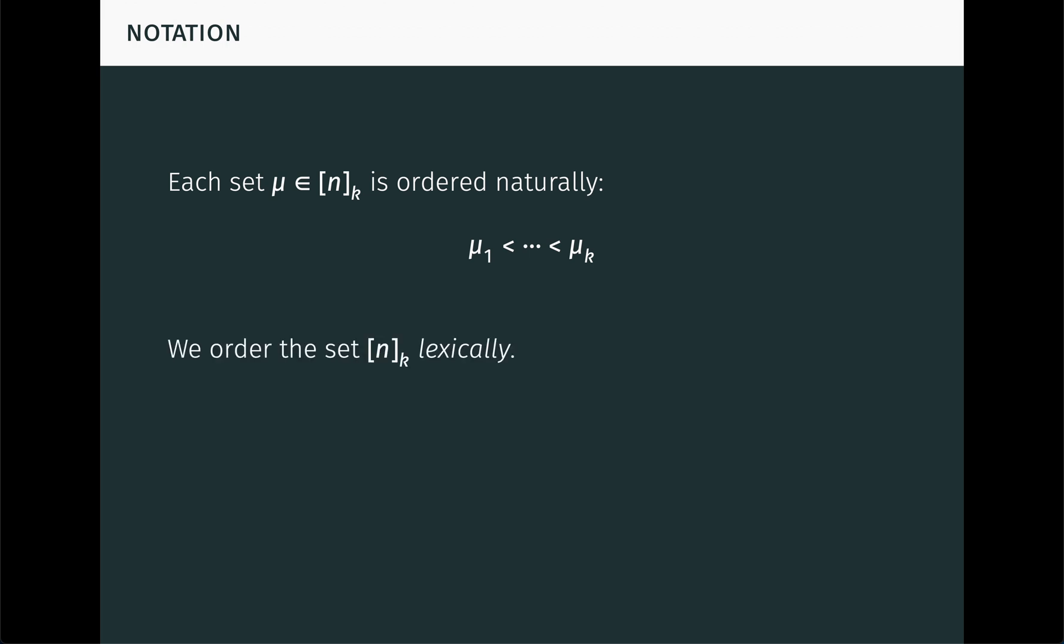We order the set (n k) itself lexically, or lexicographically if you want to be fancy, like words in a dictionary. It's easier to understand this from an example rather than a formal definition. For example, in (3,2), the sets are ordered like this. The set consisting of 1 and 2 comes first, followed by the set consisting of 1 and 3, and finally the set consisting of 2 and 3. To determine the relative ordering of two sets, we start by comparing their first elements. The set with the smallest first element comes first. If the first elements are equal, then we compare the second elements to see which comes first, and so on. Hopefully you get the idea.